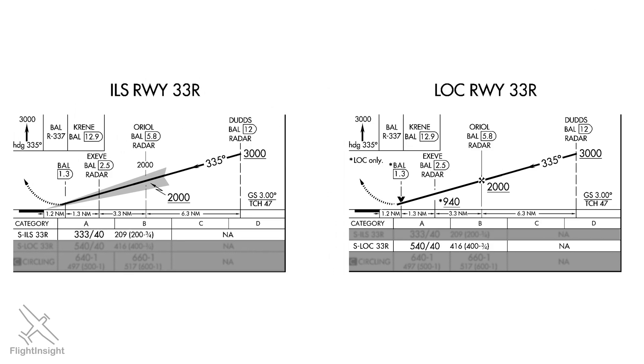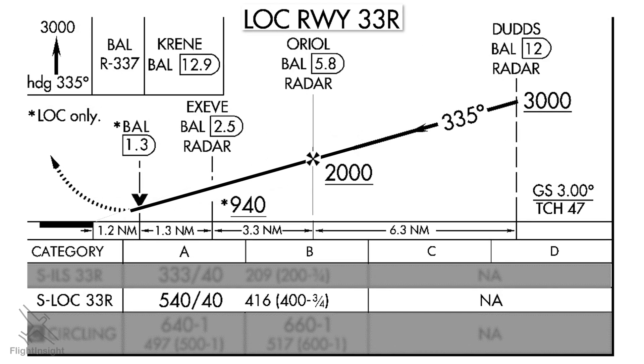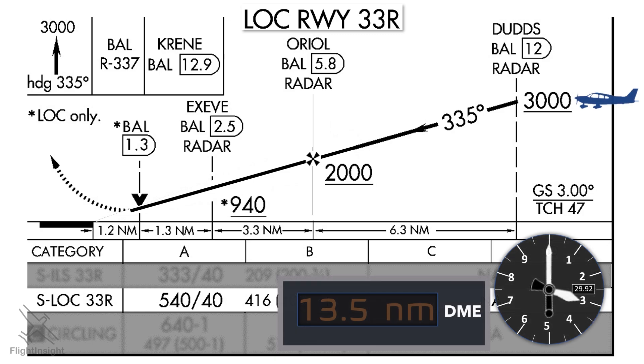Let's contrast that with the non-precision localizer-only version of this approach. Here we have no vertical guidance, so we identify the various fixes on the approach using our DME. Once again, we'll start at 3,000 feet when cleared for the localizer approach. We'll be looking for 12 DME, which indicates the DUDDS fix, when we can descend to our step-down altitude of 2,000 feet.